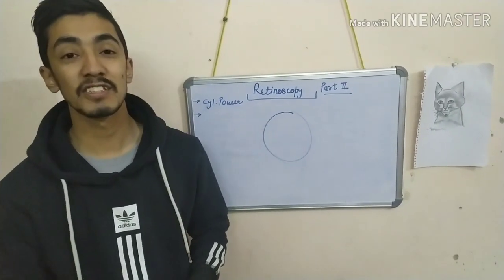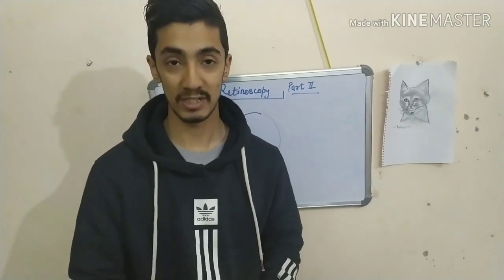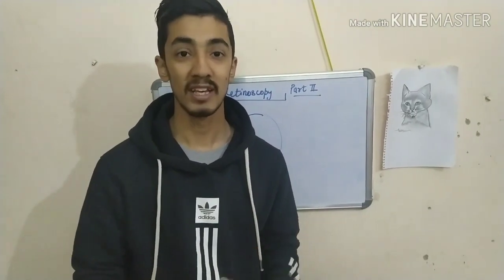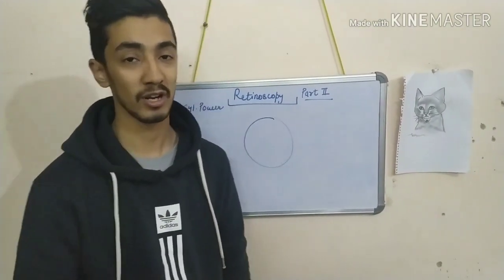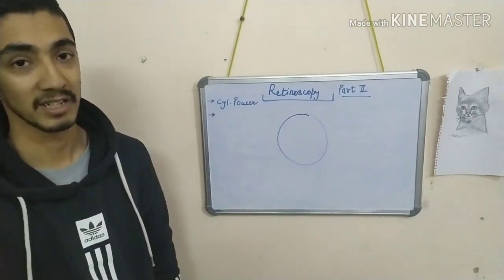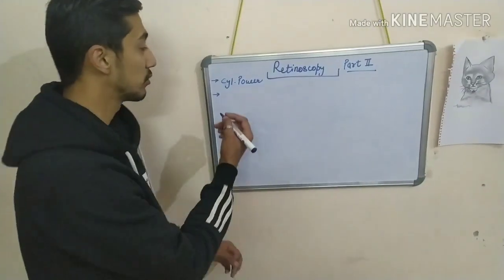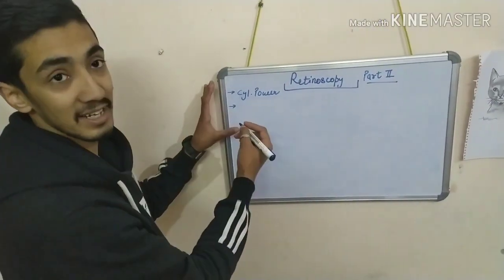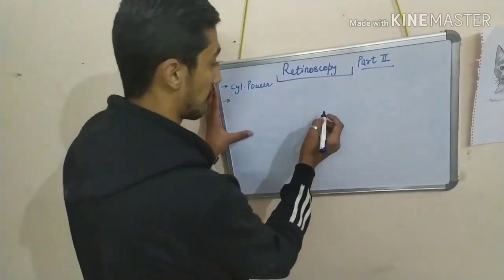As in the previous video, we learned about what retinoscopy is, with with-and-against movement, and how to neutralize the spherical meridian. In this video, we will learn how to determine the cylindrical meridian in the retinoscopy.